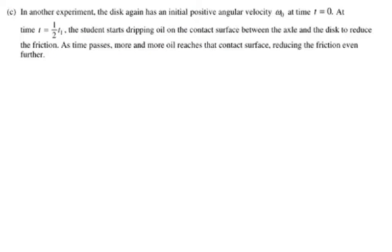For C part, they say, in another experiment, the disk again has an initial positive angular velocity omega sub 0 at the point of T equals 0. So at some time T, which is one half of the final T when it stops, the student starts dripping oil on the contact surface between the axle and the disc to reduce the friction. As time passes, more and more oil reaches that contact surface, reducing the friction even further.